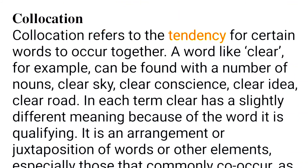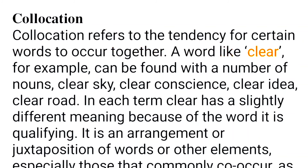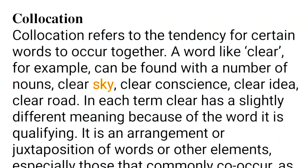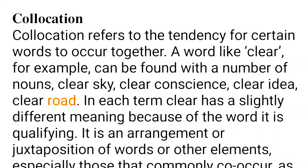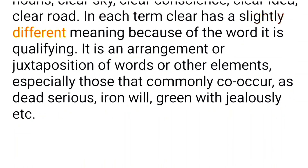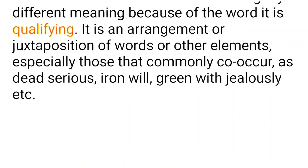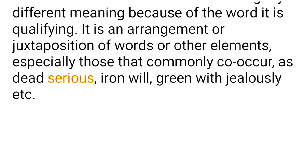Collocation refers to the tendency for certain words to occur together. For example, the word 'clear' can be found with a number of nouns: clear sky, clear conscience, clear idea, clear road — in each case, 'clear' has a slightly different meaning because of the word it is qualifying. Collocation is the arrangement or juxtaposition of words or elements that commonly co-occur, such as 'dead serious,' 'iron will,' or 'green with jealousy.'